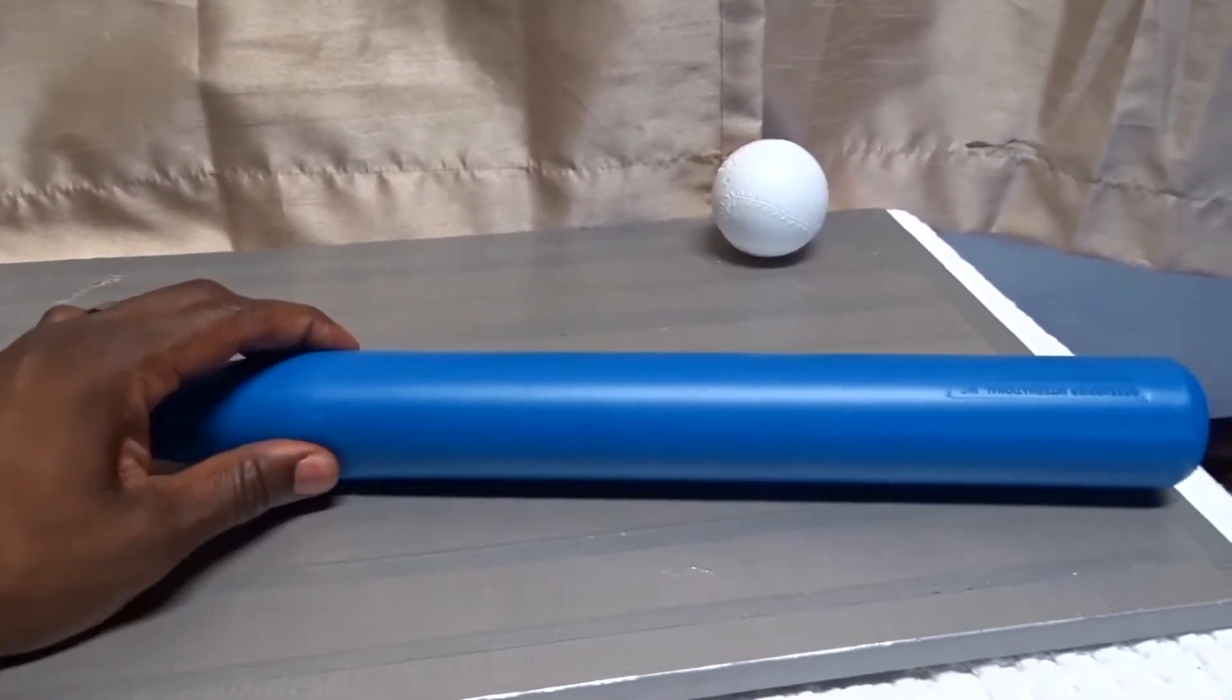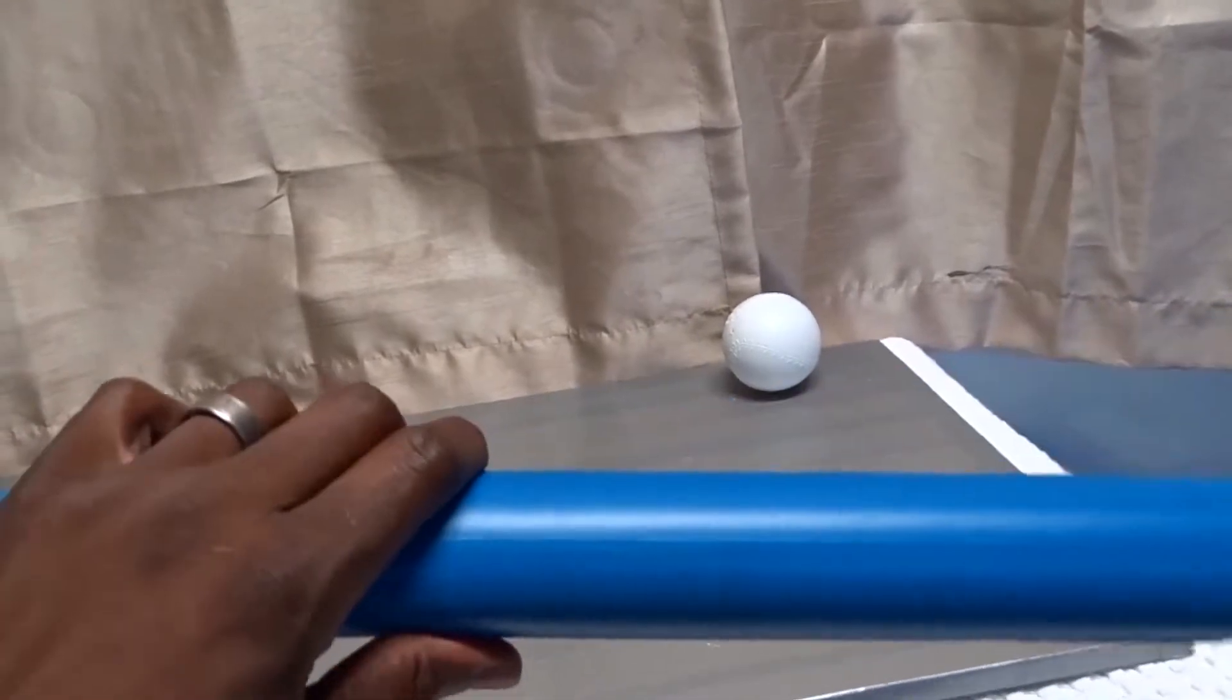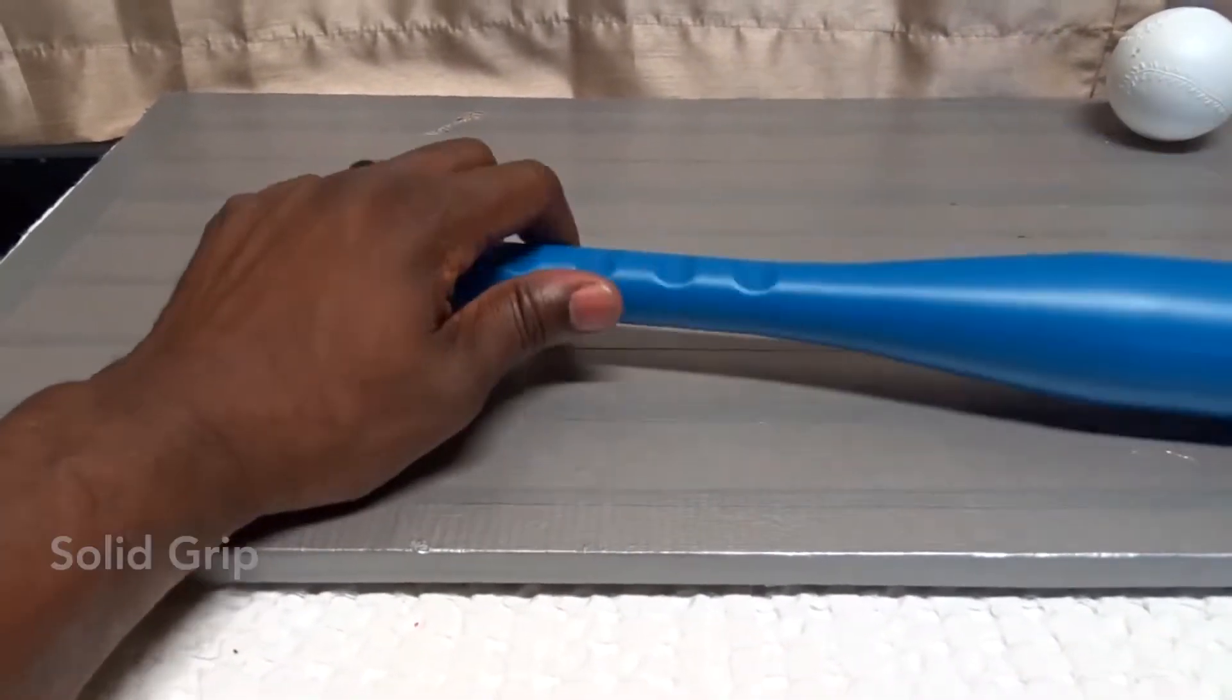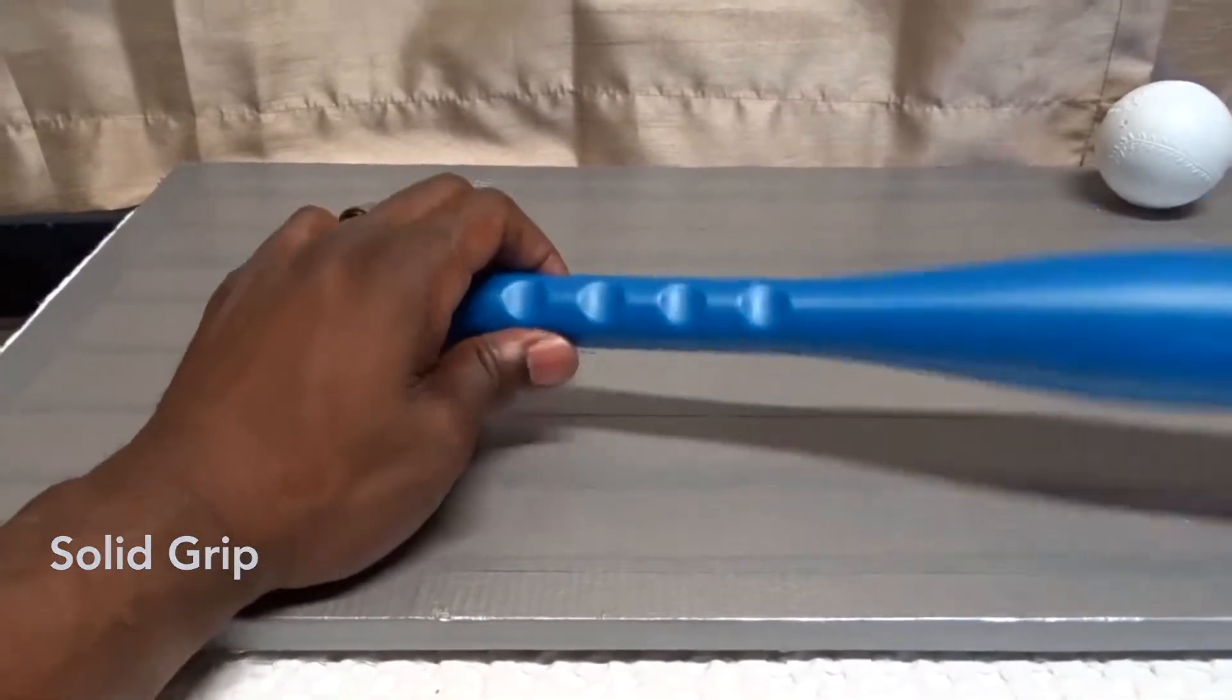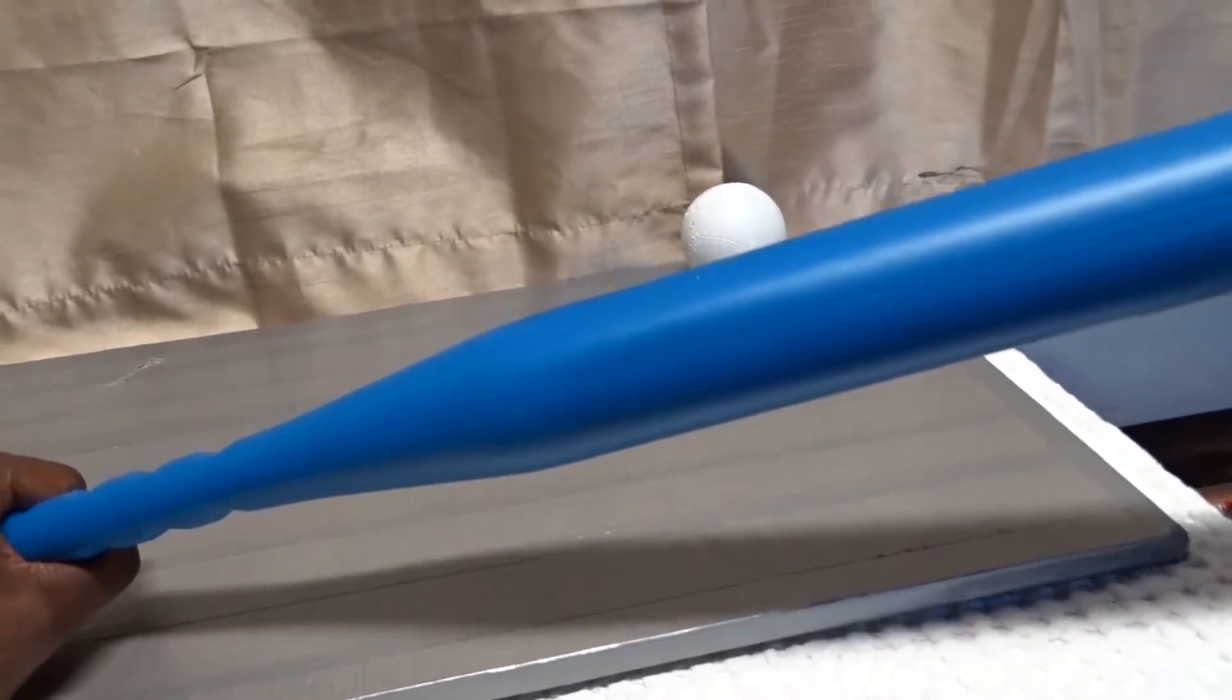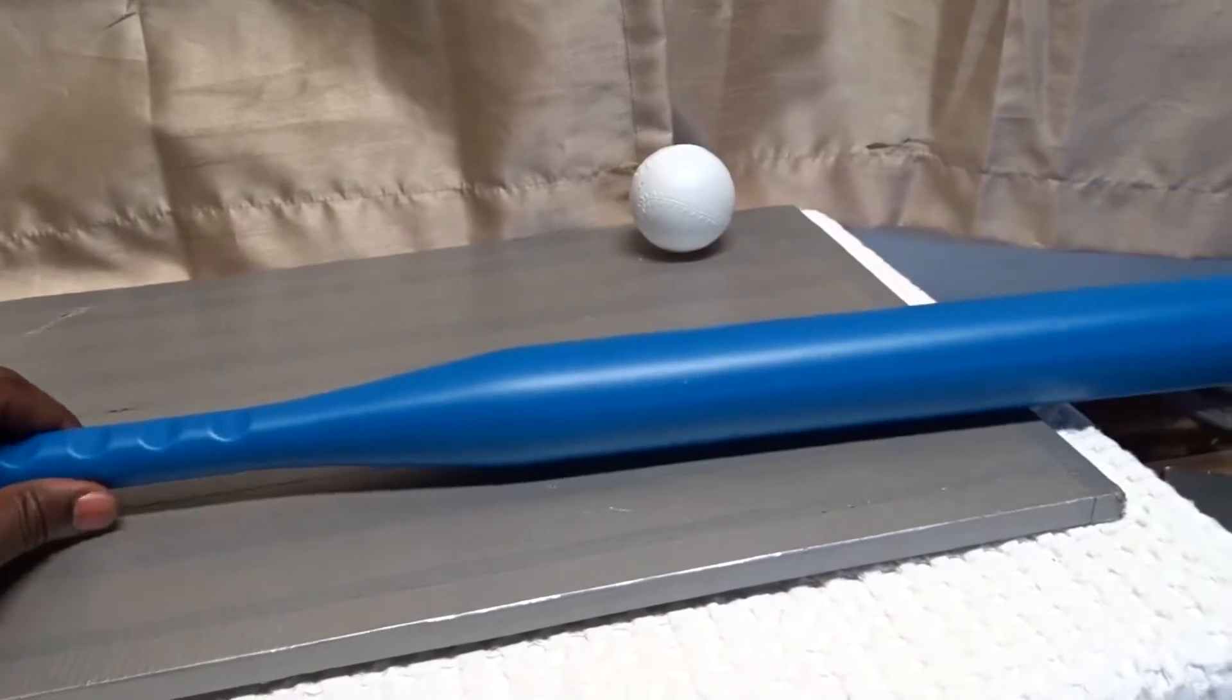This bat is made of a semi-soft plastic with ridges at the end for a nice solid grip that your son or daughter could use. It's real light - not light enough to have no oomph when you're swinging, but light enough for a child to hold.